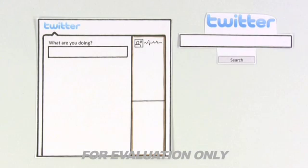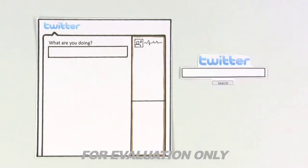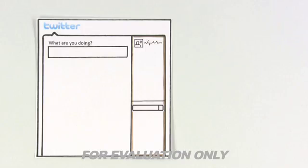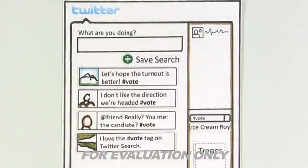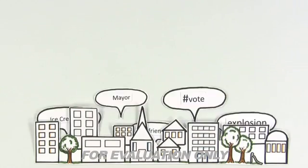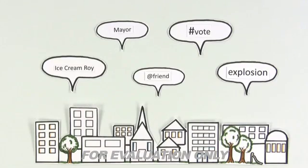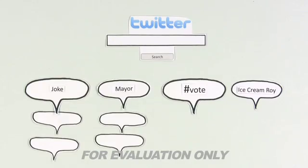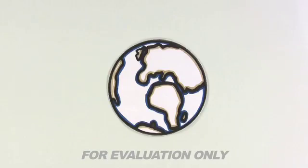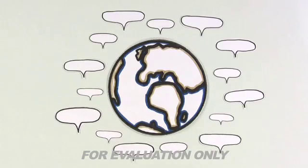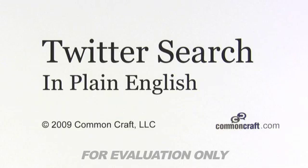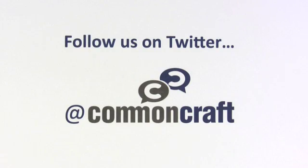Tracking these conversations is easy because Roy can search right on his Twitter profile, and if he wants to see results over time, he can save the search. With Twitter, all the small messages are useful when shared between people, but by organizing all the tweets and making them searchable, we can learn what's on the minds of millions. I'm Lee Lefevre of CommonCraft and this has been Twitter Search in Plain English. You can follow CommonCraft on Twitter for news on more videos like this one.